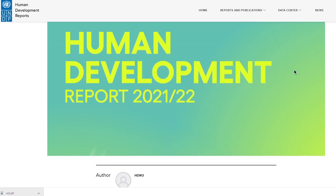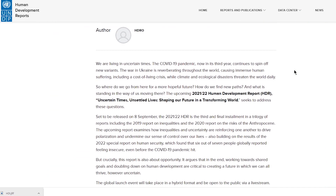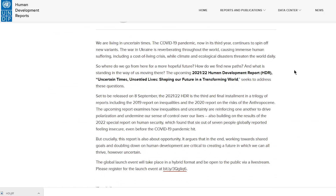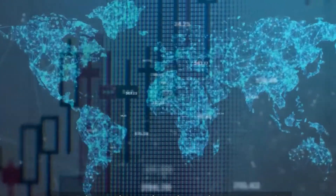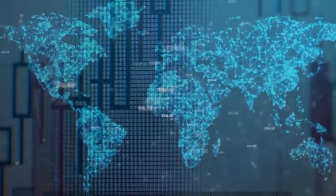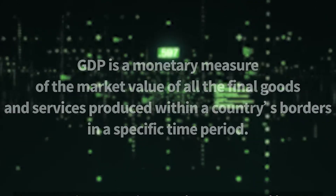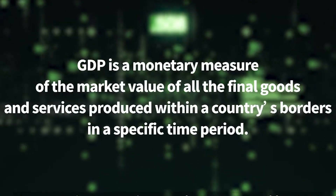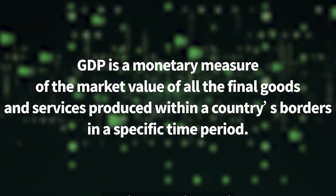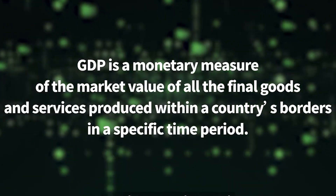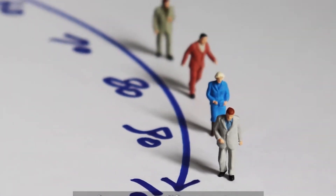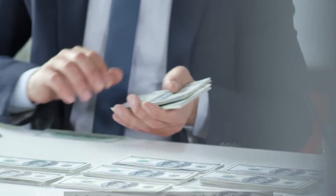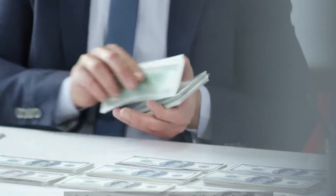The higher a country's human development, the higher its HDI value. The health aspect of the HDI is measured by life expectancy as calculated at the time of birth. Each country is normalized so that this component equals 0 when life expectancy is 20 and equals 1 when life expectancy is 85.